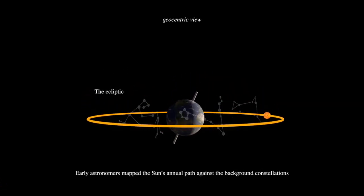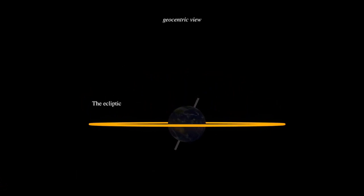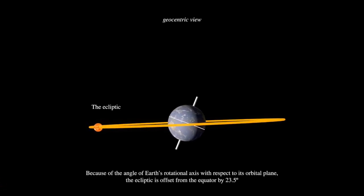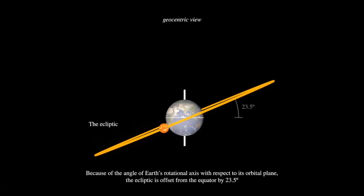Nine degrees either side of the ecliptic is the zodiacal band where planets can be found when observed from the Sun. The angle at which planets deviate from the ecliptic is their inclination.